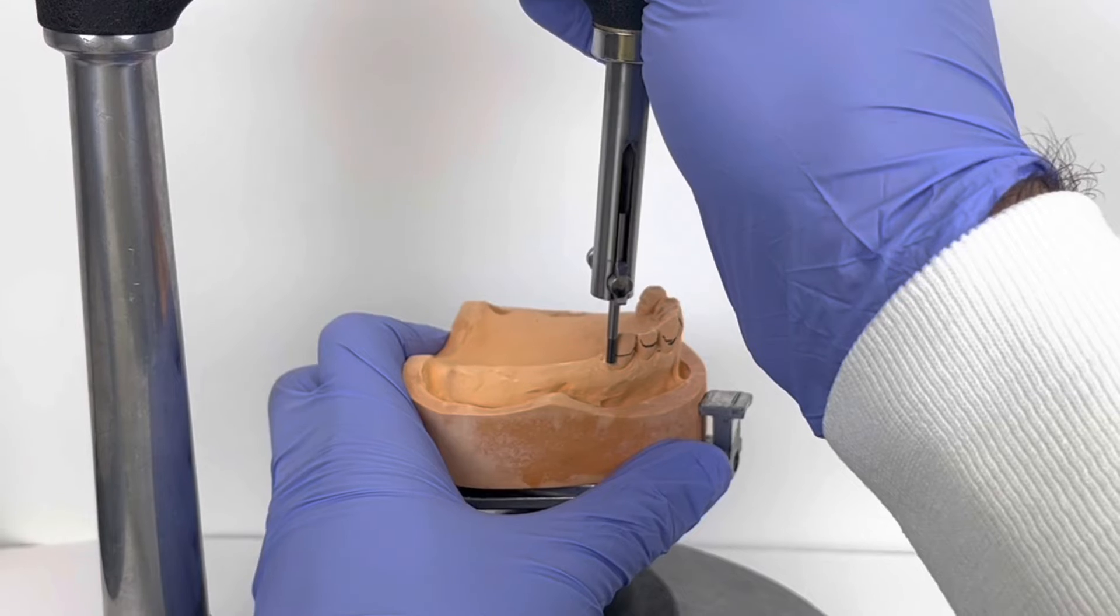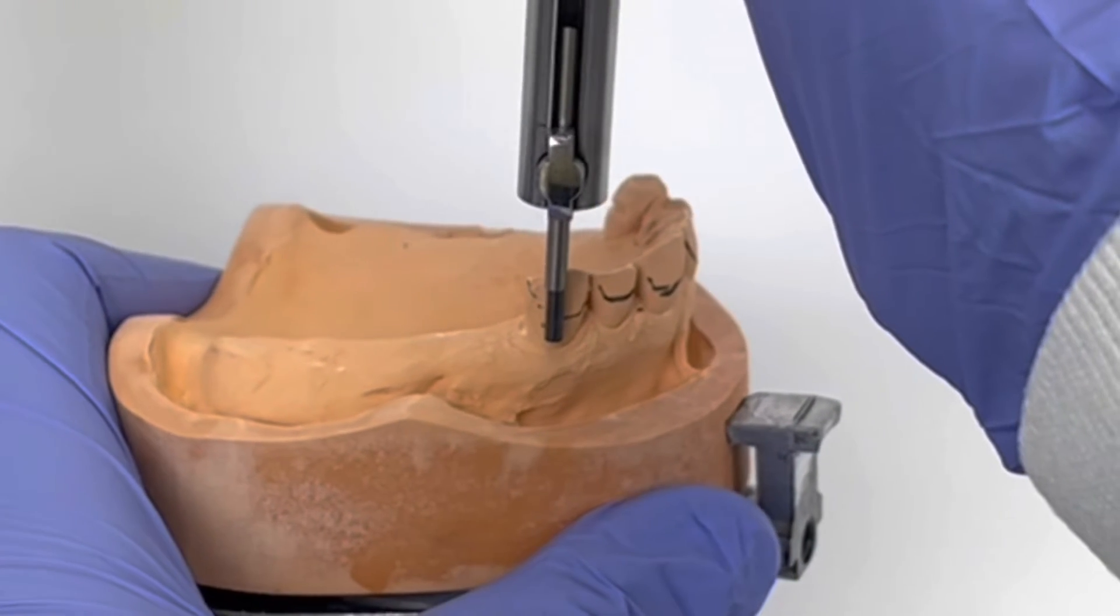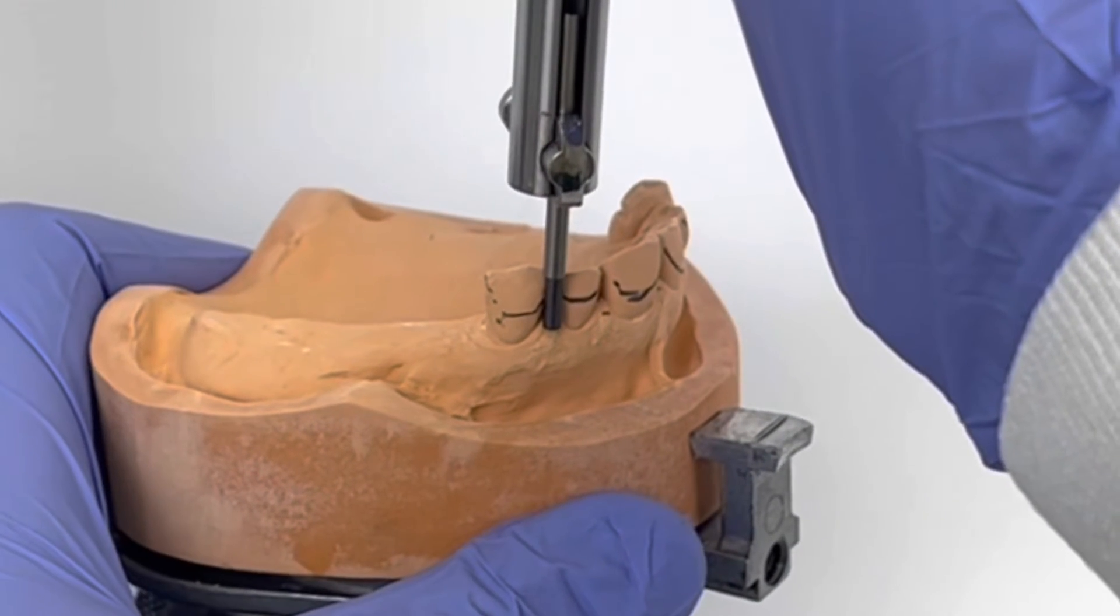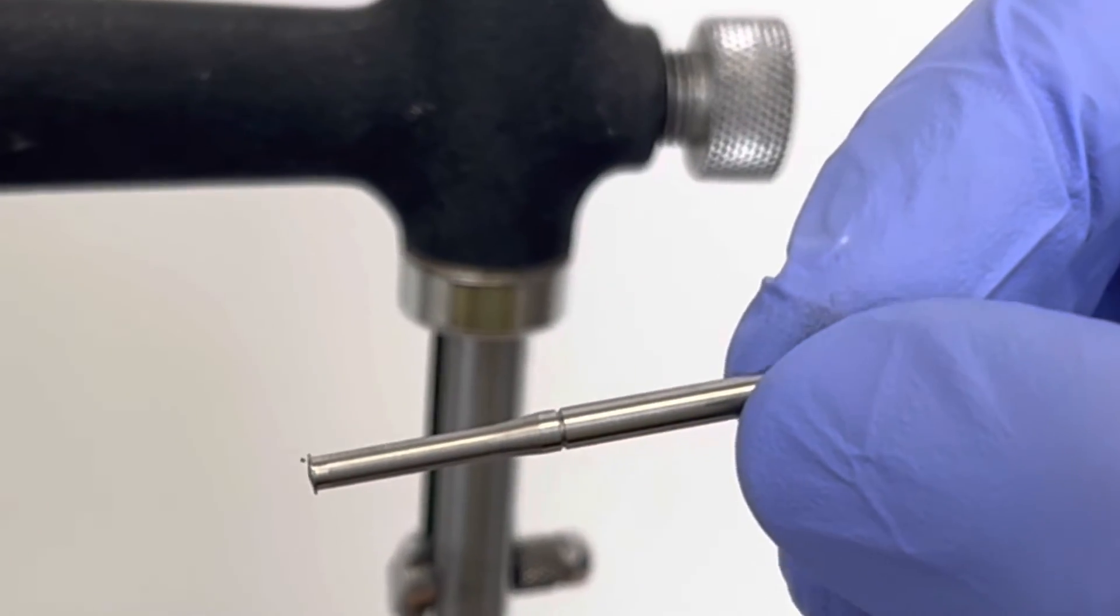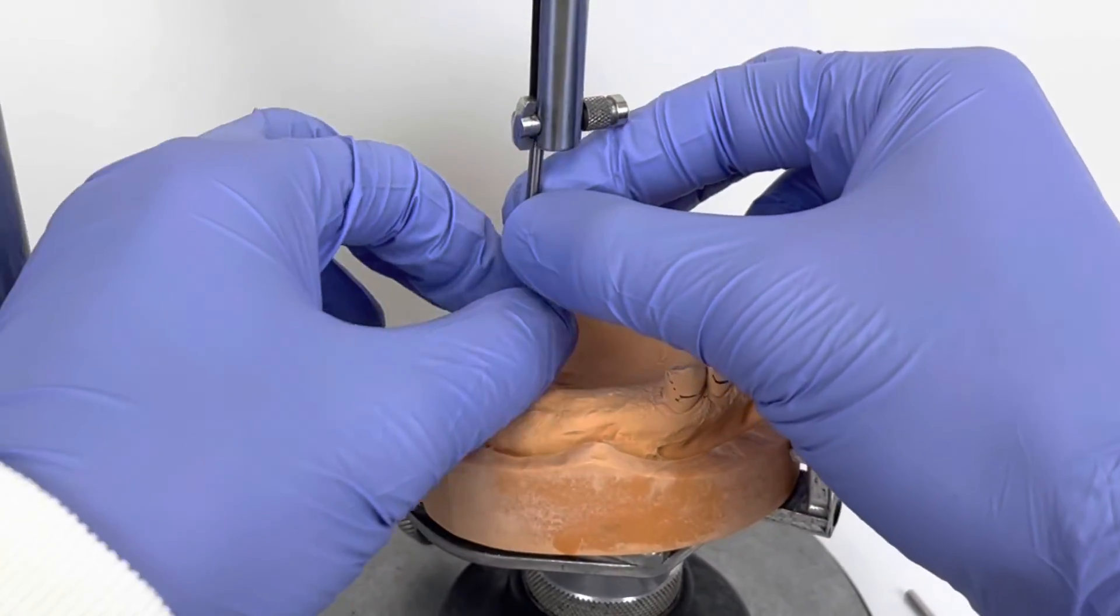It's time to measure the depth of the undercuts. Measuring the depth of the undercuts is done using undercut gauges. This here is a 0.01 inch gauge.